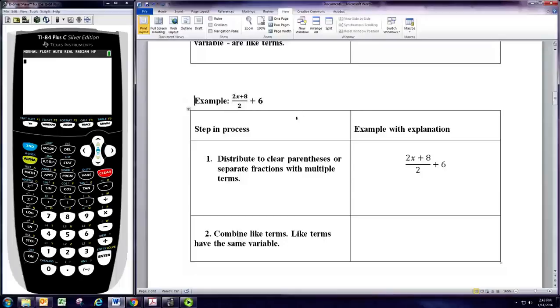So, notice there's no parentheses here, though there are implied parentheses. You can think of distributing as clearing parentheses. But what we're going to do here is sort of separate the fraction. So, we're going to distribute this 2 by dividing the two terms in the numerator, the 2x and the 8, both by 2. So, we'll just do 2x divided by 2.